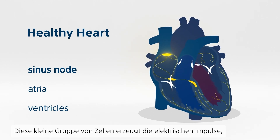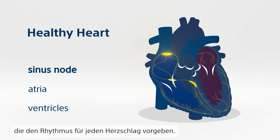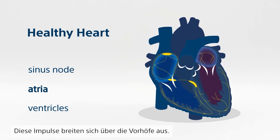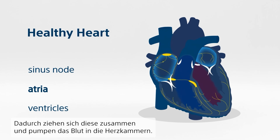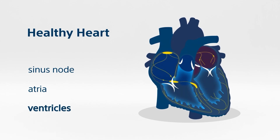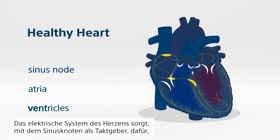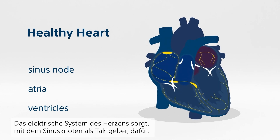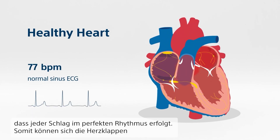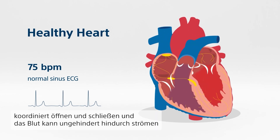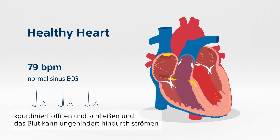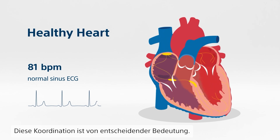This small cluster of cells generates the electrical impulses that set the rhythm for each heartbeat. These impulses spread across the atria, causing them to contract and push blood into the ventricles. The heart's electrical system, led by the sinus node, ensures that every beat is timed perfectly, allowing the valves to open and close in harmony and the blood to flow smoothly. This coordination is crucial.